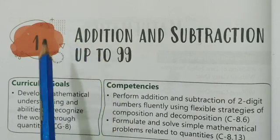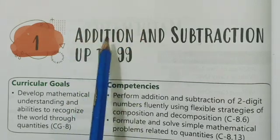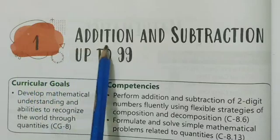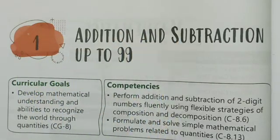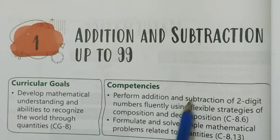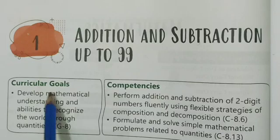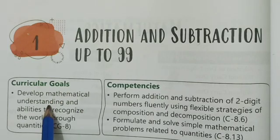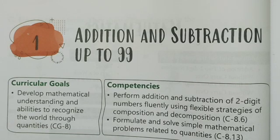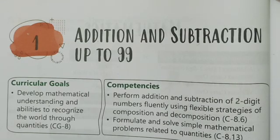Addition and subtraction up to 99, that means 99 number tak numbers use karke we will learn the addition and subtraction concept. In this topic the students will be able to develop their mathematical understanding and also they will know the world through the quantities. Now we will see practice 1.2 is about which concept.